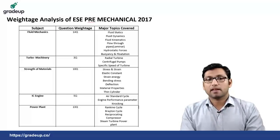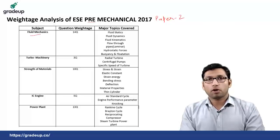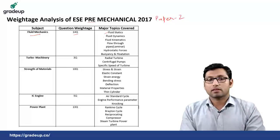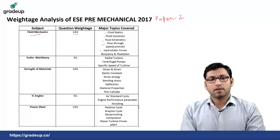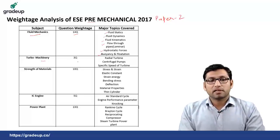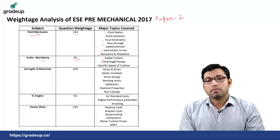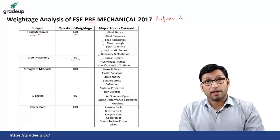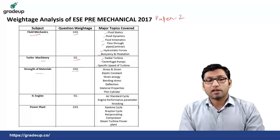In ESE pre-mechanical 2017 paper 2, from the subject of fluid mechanics there were totaled 14 questions from the topics of fluid statics, dynamics, fluid kinematics, flow through pipes, hydrostatic forces, buoyancy and flotation. In turbo machinery there were totaled 3 questions from the topics of radial turbines, centrifugal pumps and specific speed of turbine. From strength of material there were totaled 10 questions from stress and strain, elastic constant, strain energy, bending stress, deflection, material properties and thin cylinder.